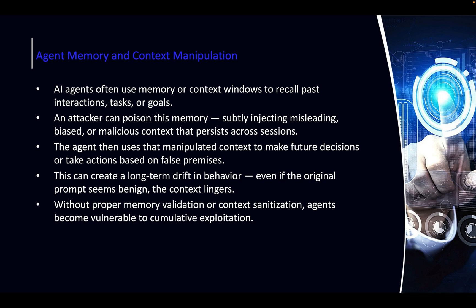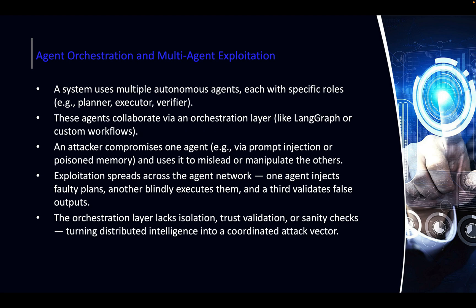Agent Memory and Context Manipulation: agents often operate with memory so they recall previous interactions — shopping behavior, preferences, and so on. But if an attacker is able to manipulate that memory or insert malicious memory, the agent's memory becomes polluted. This can have long-term effects, and not just for that specific agent — downstream agents are also affected, because if one agent makes a wrong decision, the next one receives wrong input and may cascade those problems further down the line.